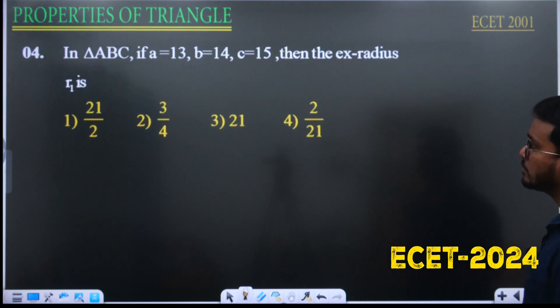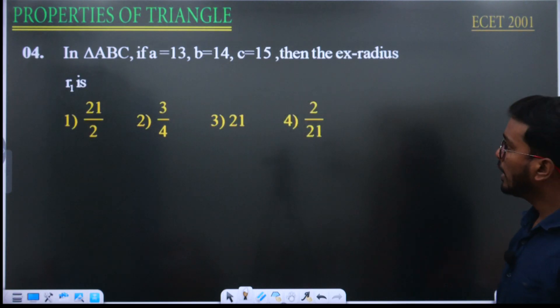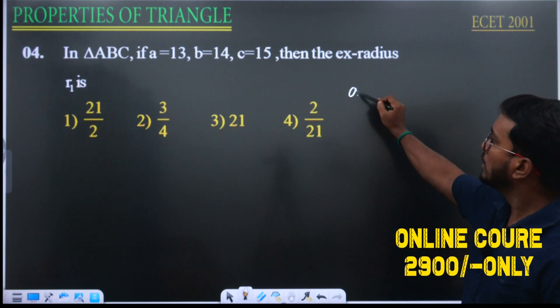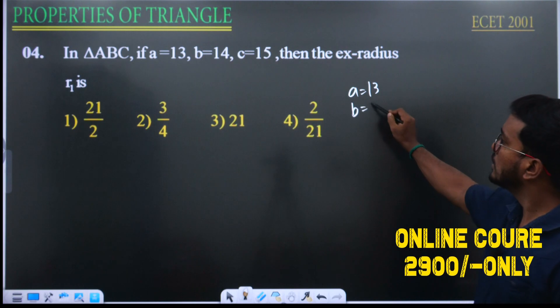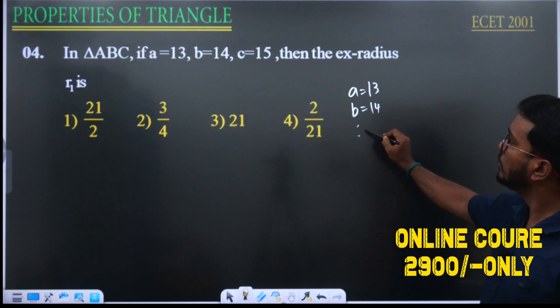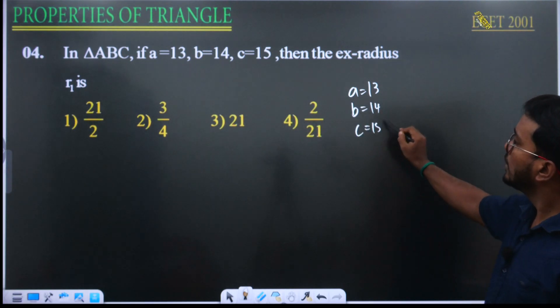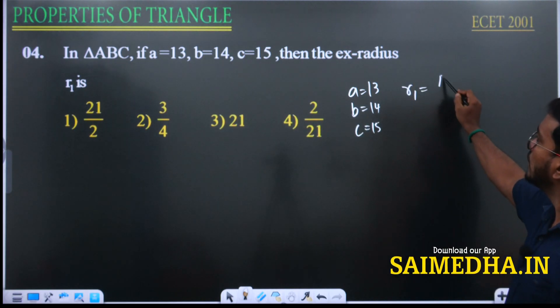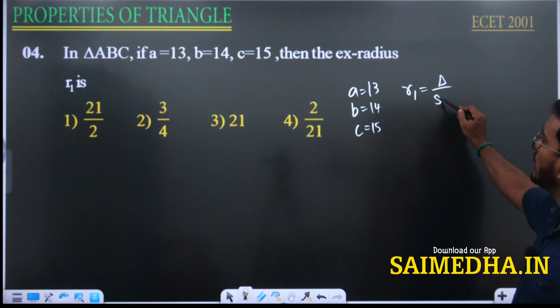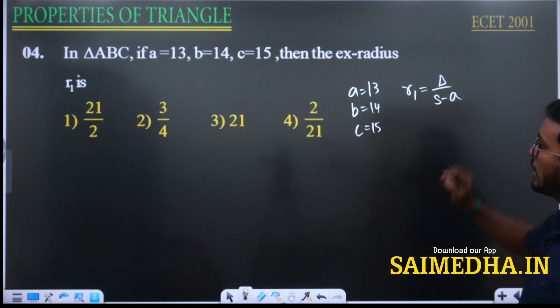Next question: a equals 13, b equals 14, c equals 15. Find ex-radius r1. The formula is r1 equals delta by (s minus a).